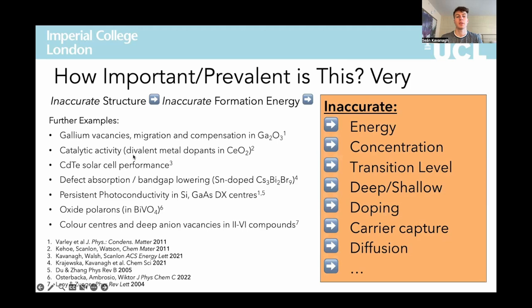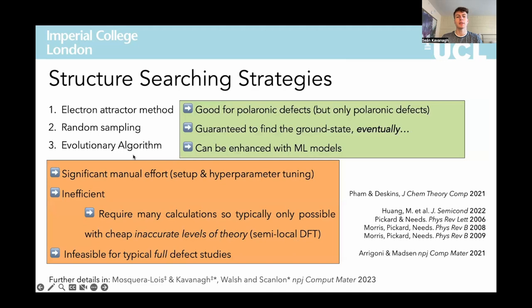Now that we've established the importance and prevalence of this behaviour, what can we use to combat it? There have been a handful of strategies proposed in the literature, but unfortunately their efficiency — or inefficiency — in terms of computational cost and manual implementation renders them infeasible for typical defect studies where we look at a range of defects at once.